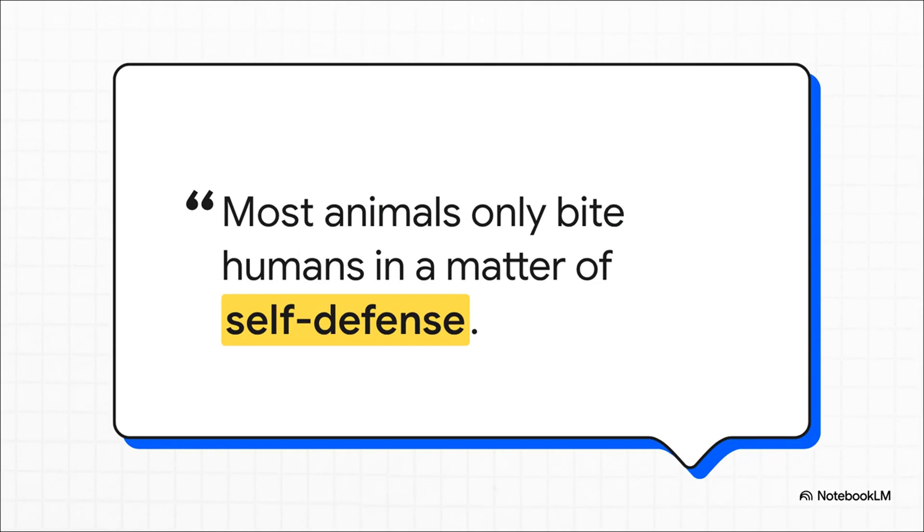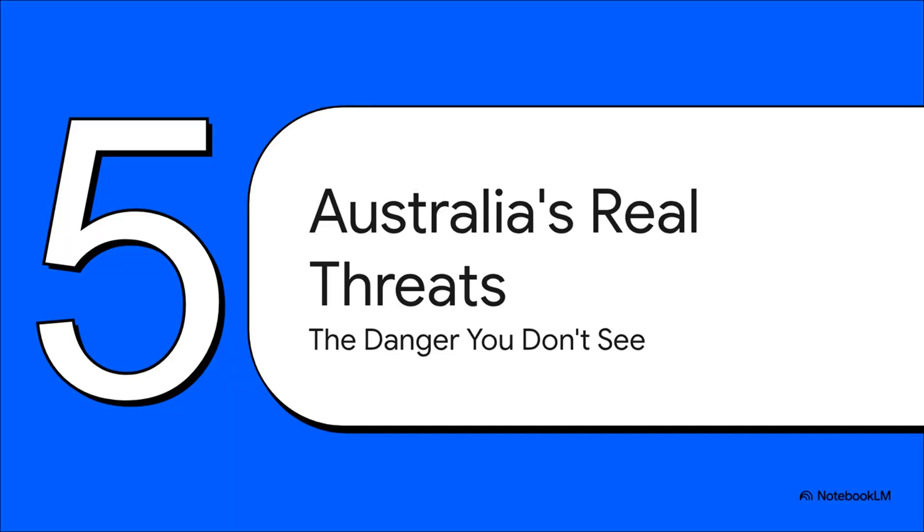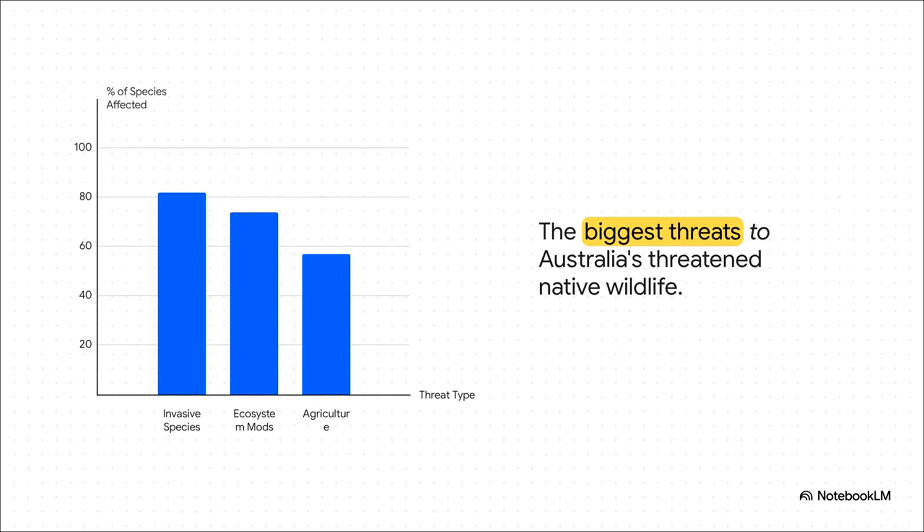These animals are not out there hunting people. They bite or they sting when they feel threatened or cornered, or when someone accidentally steps on them. It's all about self-defense, not a malicious attack. They're just trying to survive, same as us. So, if these legendary, dangerous animals aren't actually the biggest killers, then what is? This brings us to the final, really crucial twist in our story, where we have to rethink what danger really means down under. And this is where the entire story just flips on its head.